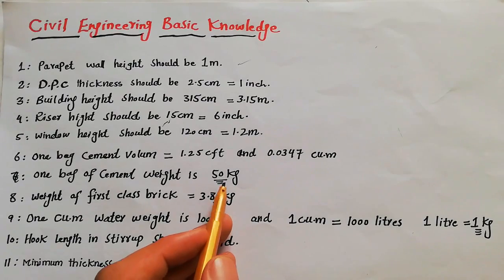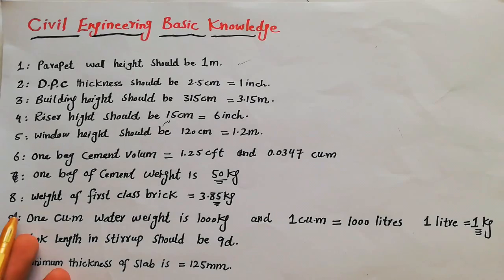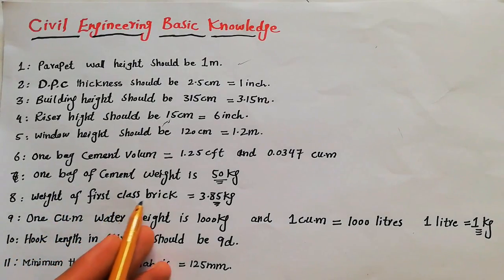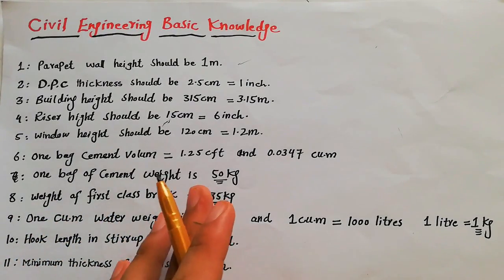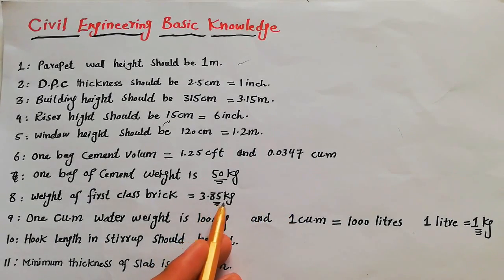Eighth number: weight of first class brick. First class brick weight is 3.85 kg.